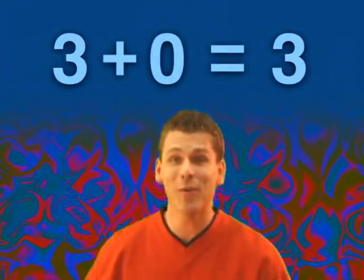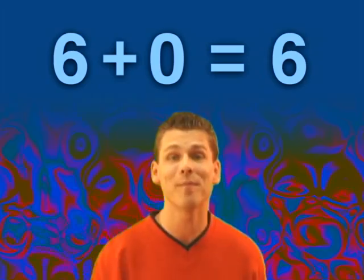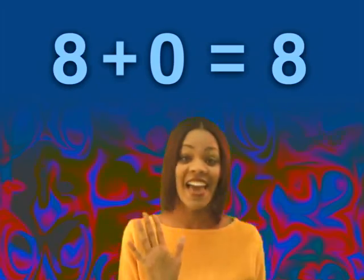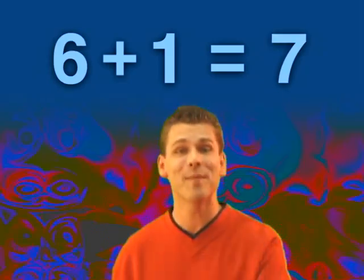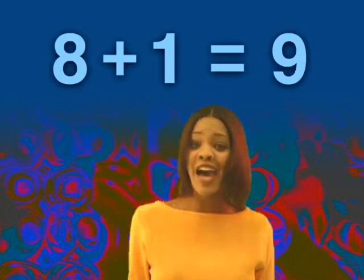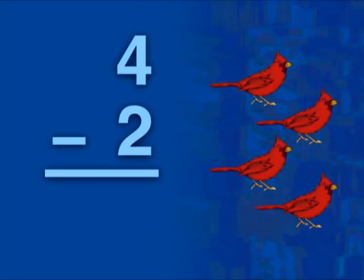A number plus zero is always the same number. Just stay there. A number plus one is always the next number. Just count up when you add. Four minus two is...